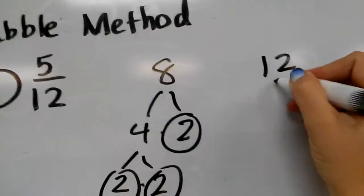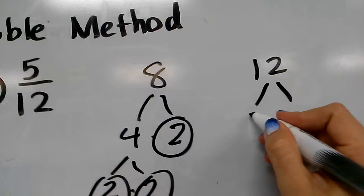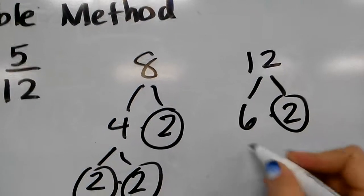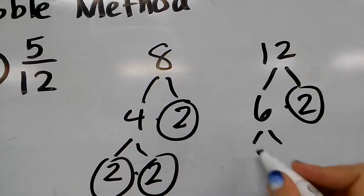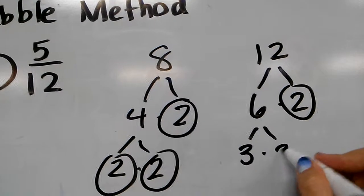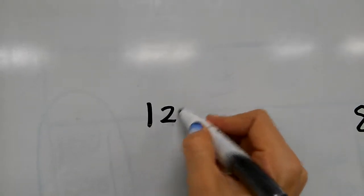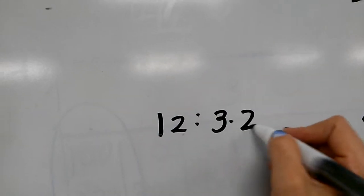The prime factors of 12 I find by first finding factors of 12, which is 6 times 2. 2 is prime, 6 is not. The factors of 6 are 3 and 2, both are prime. So my prime factors of 12 are 3 times 2 times 2.